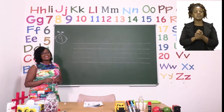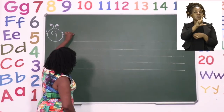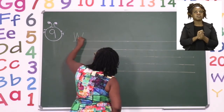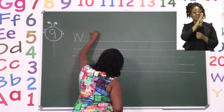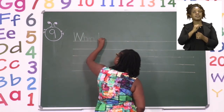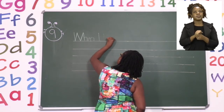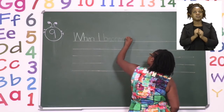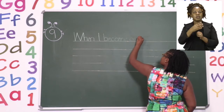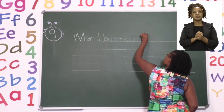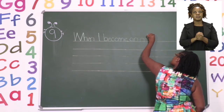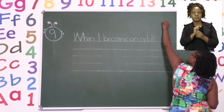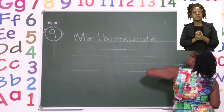Remember, when we're starting any sentence, we start with a capital letter. So I am going to start with my capital letter W. Then I'm going to move on and say 'when' — capital letter I — 'become'. Make sure that when you're writing, boys and girls, your handwriting is the same size. 'When I become an' — then we have the word 'adult'. When I become an adult, then we are going to put a comma. Remember, a comma looks like this but it sits on the line.